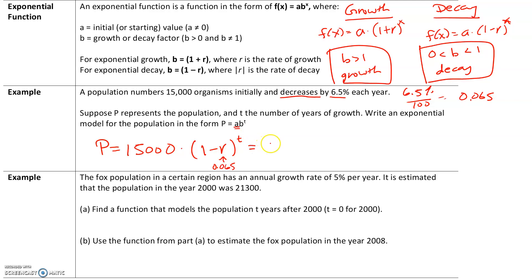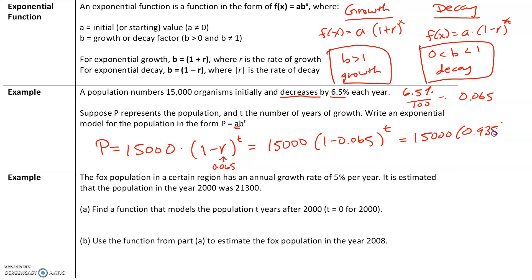So our function is: population = 15,000 × (1 − 0.065)^t. Simplifying, 1 − 0.065 = 0.935. So we have 15,000 × 0.935^t. Notice that when the b value is between 0 and 1, we have exponential decay. If it were greater than 1, we would have exponential growth.